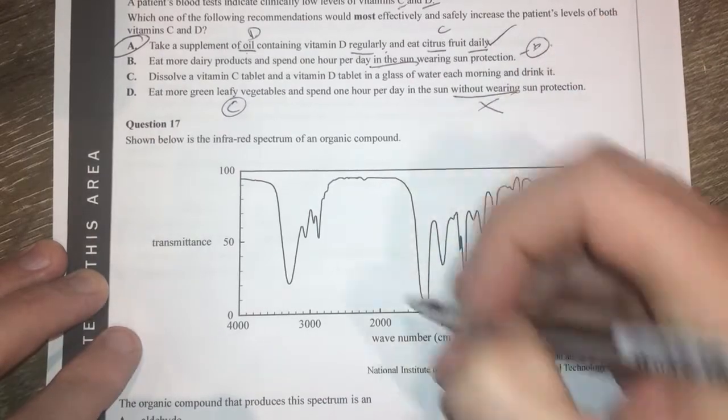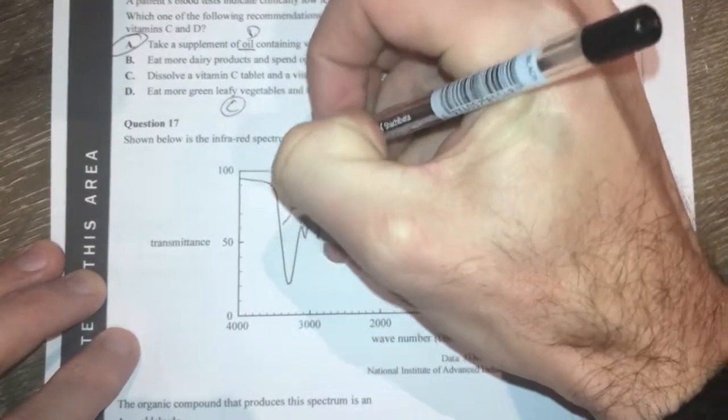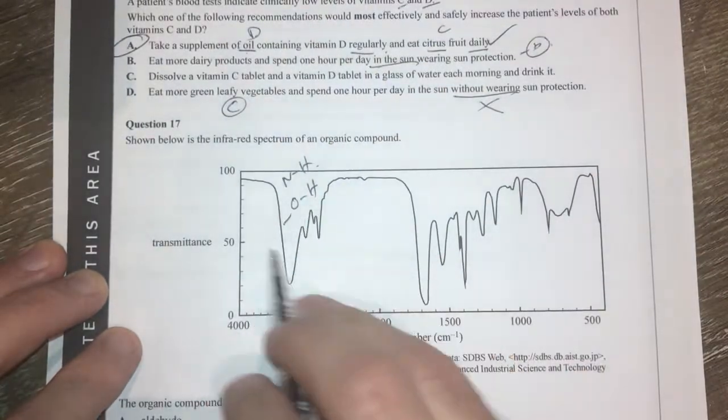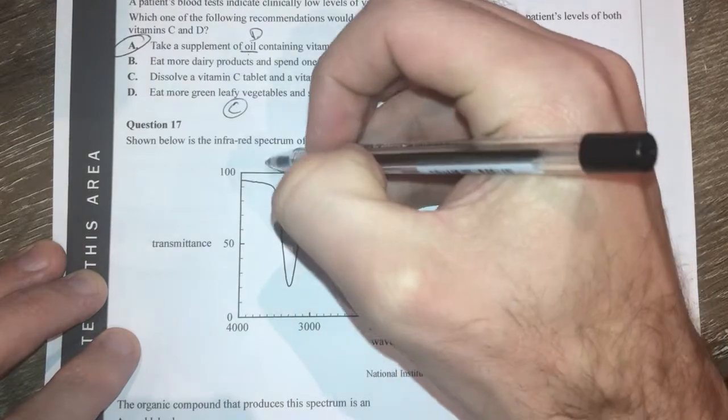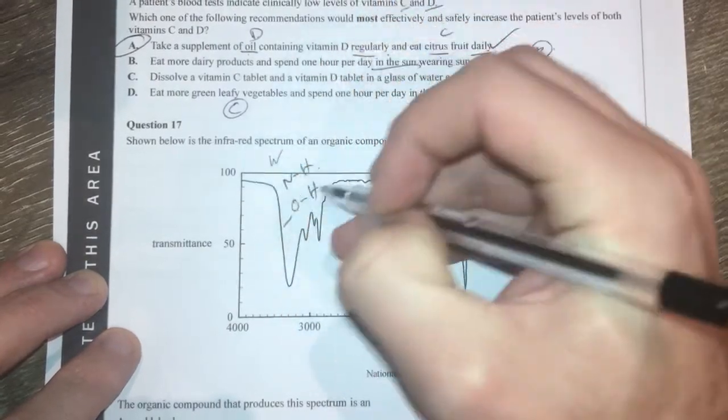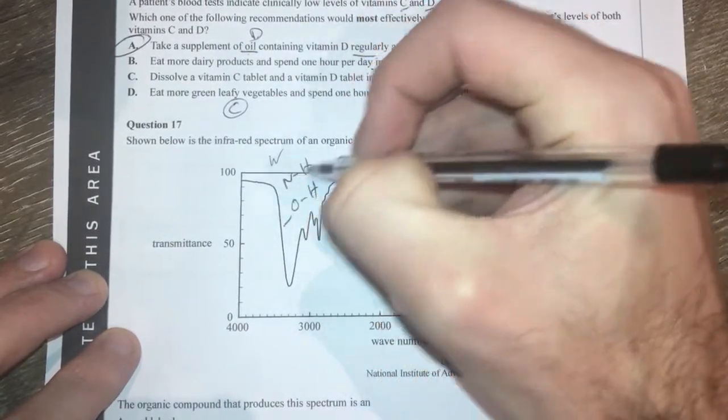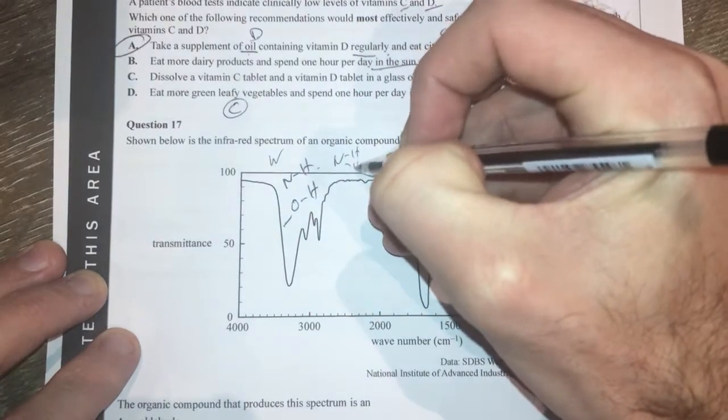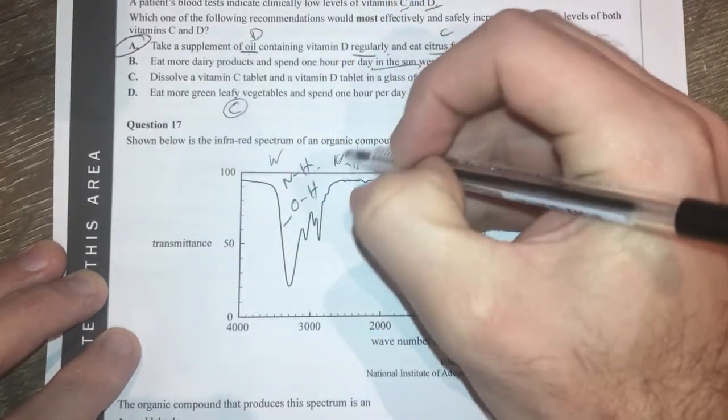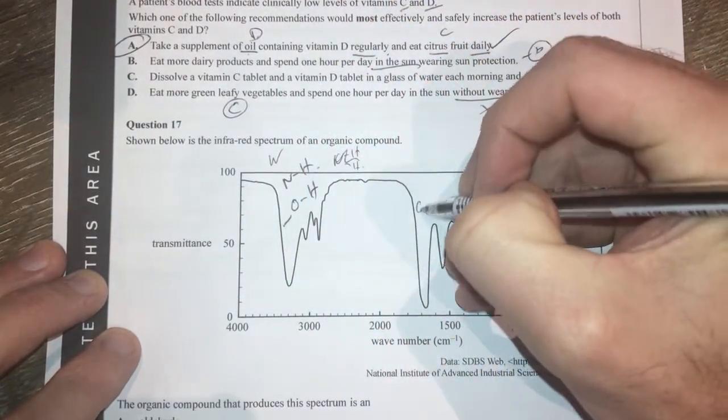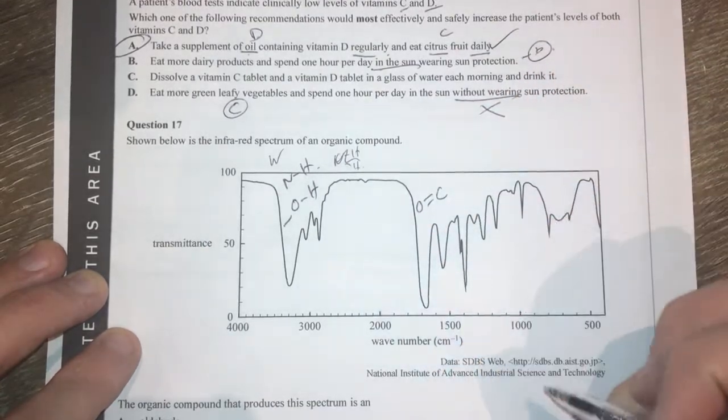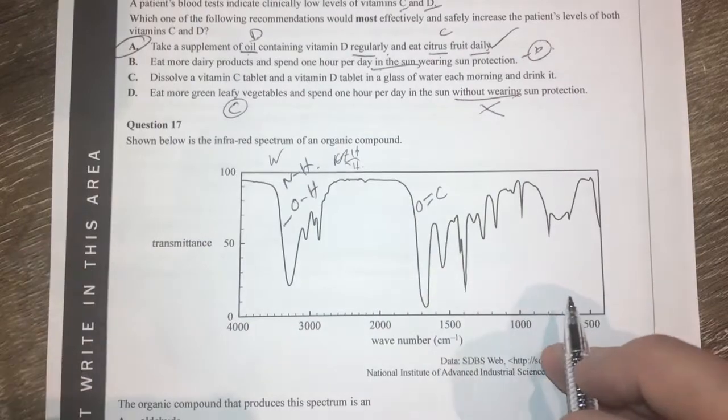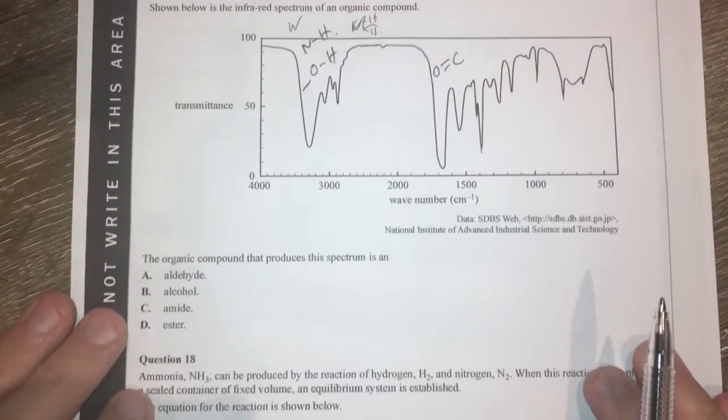This is an O to H or an N to H. This characteristic here kind of looks like an O to H more than anything else because the N to H is normally like two fangs because it will be like a NH2 there, so they'll have two fangs there. This one here is a C double bond to O there because it's about 1700. This kind of looks like a carboxylic acid to me but let's have a look at what the question actually says.